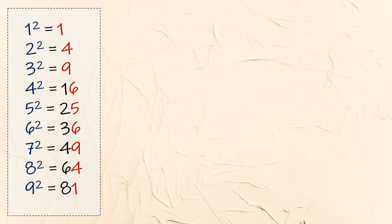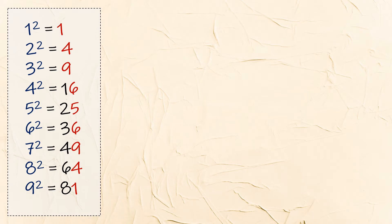To do this, you must know the squares all the way up to 9. I think most of you know this already. If not, here's the list: 1 squared is 1, 2 squared is 4, 3 squared is 9, 4 squared is 16, 5 squared is 25, 6 squared is 36, 7 squared is 49, 8 squared is 64, 9 squared is 81.